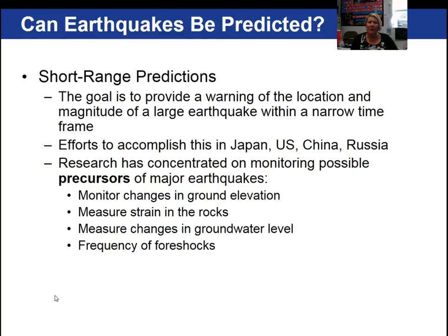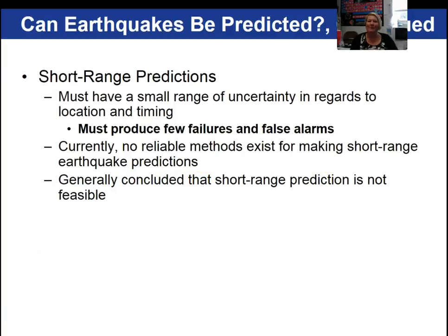Can we predict an earthquake? Not really, not in the short term. What we look at in trying to predict an earthquake in the short term are precursors: changes in ground elevation, changes in strain in the rock, changes in groundwater levels, and an increase in the number of foreshocks. These are potential precursors that may indicate an earthquake is going to occur. Overall, short-range prediction has not been very successful and is not feasible at this time.